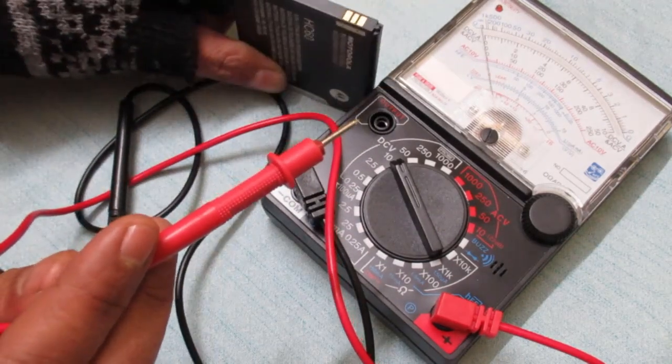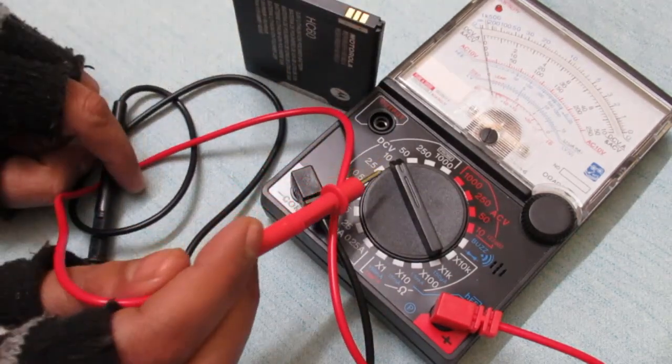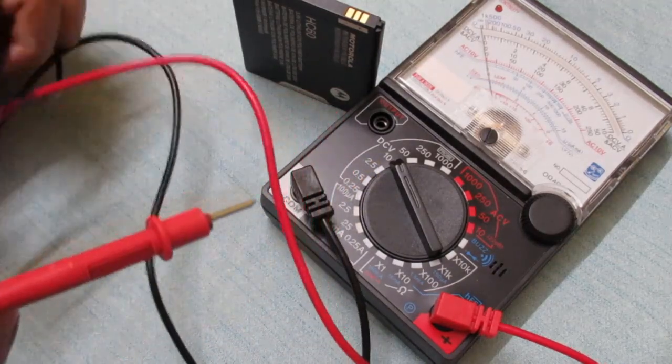To measure battery voltage, we need only the positive and negative terminals. Set the multimeter according to the video.